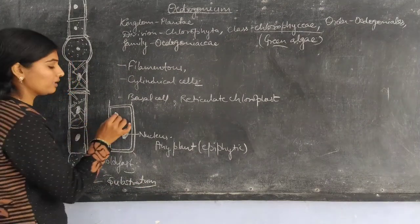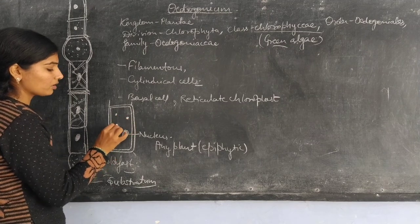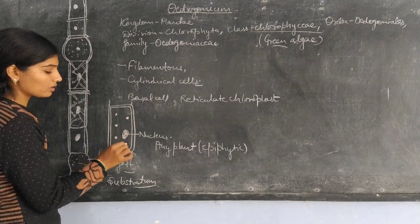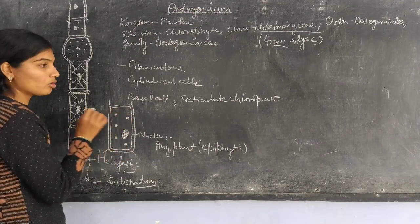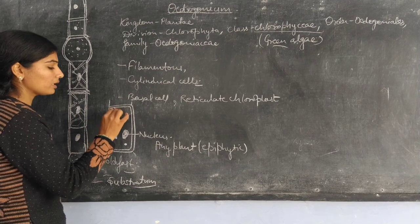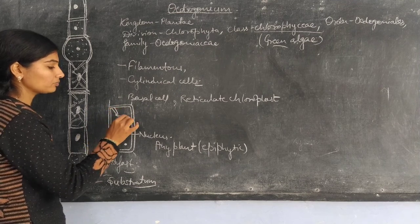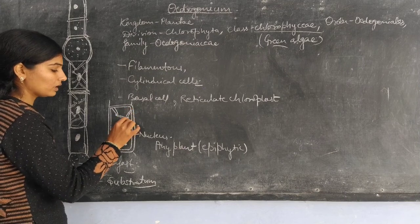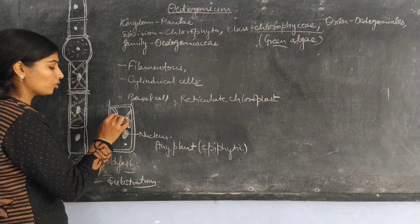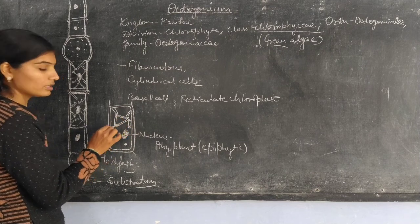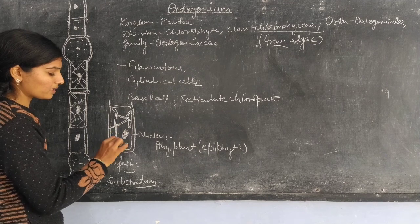There are presence of pyrenoids. Pyrenoids store food material in the form of starch. The chloroplast is reticulate in form and it covers the whole portion of the cell. This is the maximum portion of the lumen present here.